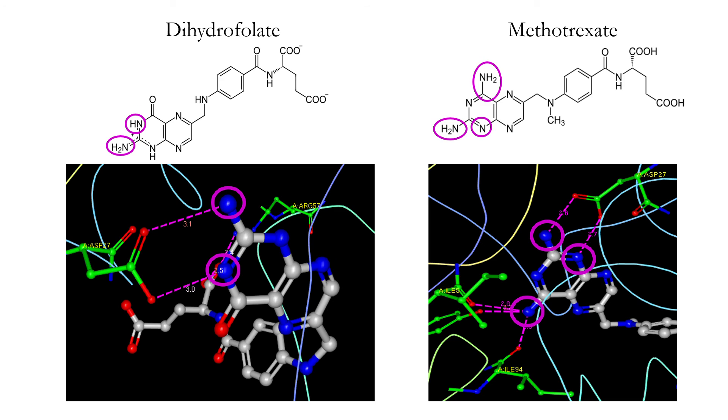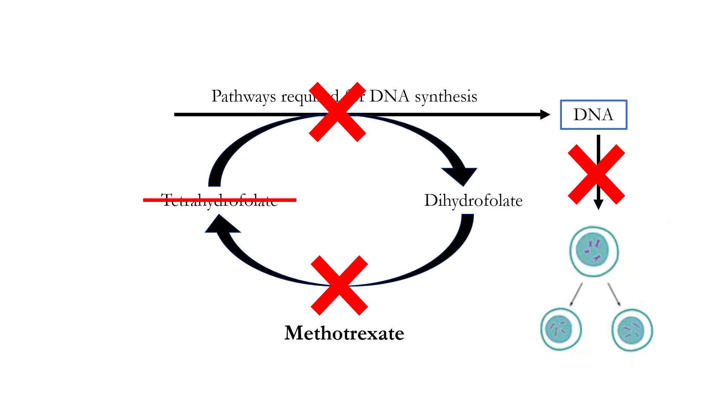Interestingly, this causes methotrexate to bind in a different orientation than dihydrofolate. You can see this if you look at the placement of the aspartate 27 residues in relation to the fused rings, as well as the direction the rest of each molecule points. And that's how methotrexate inhibits the mechanism of DHFR and kills cancer cells.